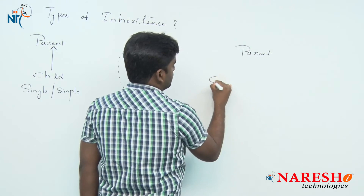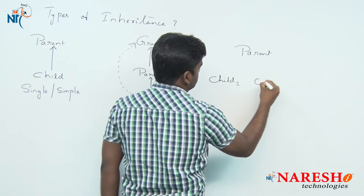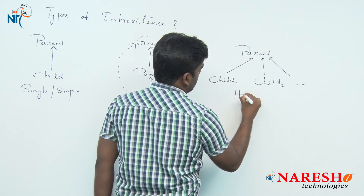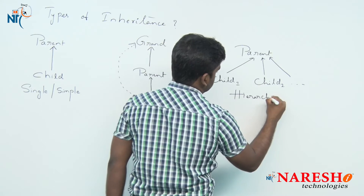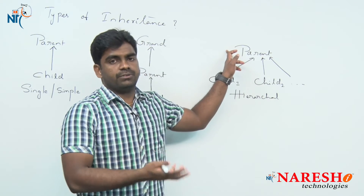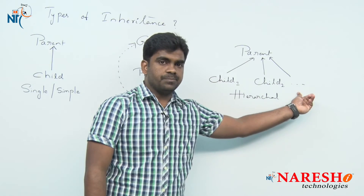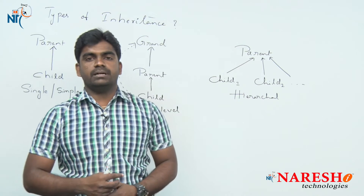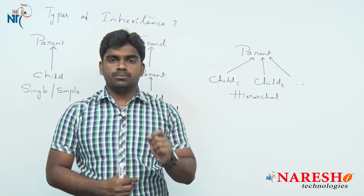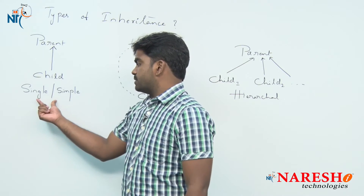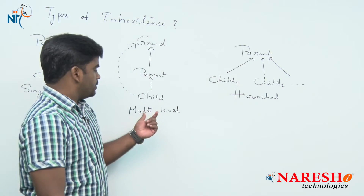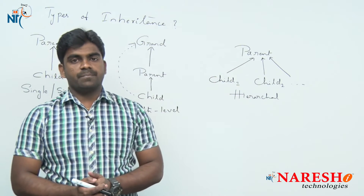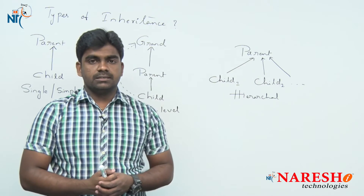The third type is hierarchical inheritance. Here, a parent is sharing its functionality with n number of children — all of these are extension relationships. One class sharing functionality with, or n number of classes extending the functionality of, one parent class is called hierarchical inheritance. Java supports only three inheritance concepts: single or simple inheritance, multi-level inheritance, and hierarchical inheritance.